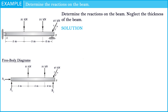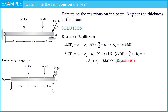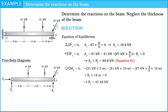There are three unknowns. Let's apply the equations of equilibrium to solve the problem. The sigma of Fx is equal to 0, and the Ax value is equal to 16.2 kN. The sigma of Fy is equal to 0, and Ay plus By is equal to 83.6 kN — let's make this equation 1. The sigma of moment on point A is equal to 0, and we can compute the value of By, which is equal to 47.48 kN.